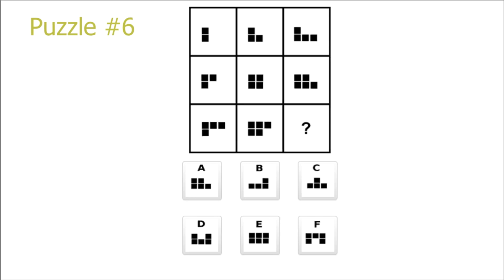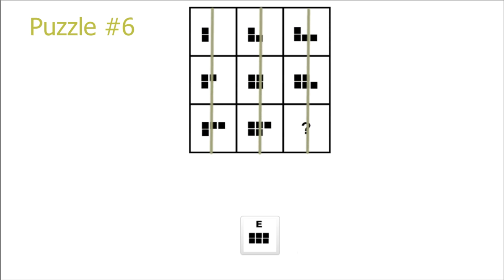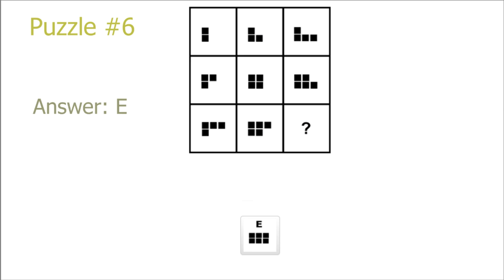Puzzle 6. Here we see some black squares. If we look at the top black squares, we see that there is the same amount on every row. And if we look at the bottom black squares, we see that it's the same on every column. So we get that it's 3 on top and 3 on bottom, and our answer is E.